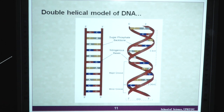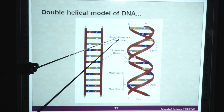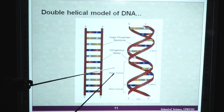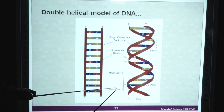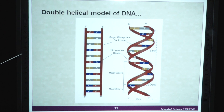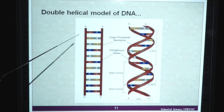This is the double helical model of DNA. Here we can see the sugar-phosphate backbone and the nitrogenous bases with major and minor grooves. We have different nitrogenous bases like adenine, guanine, cytosine, thymine and uracil. Here, guanine is bonded to cytosine and thymine is connected to adenine.